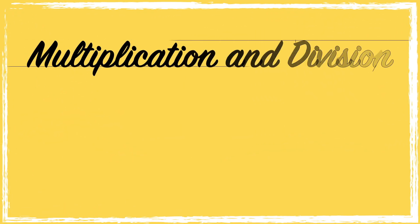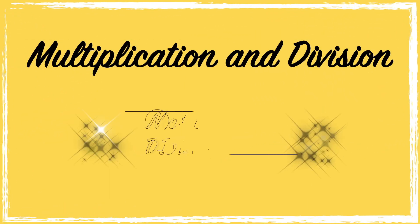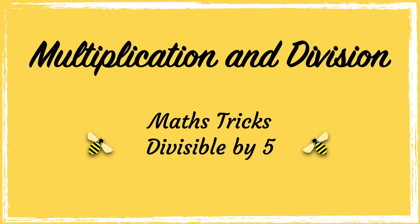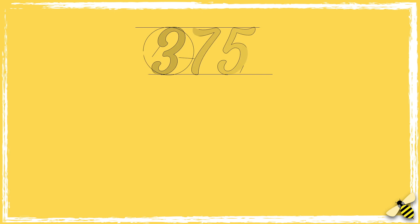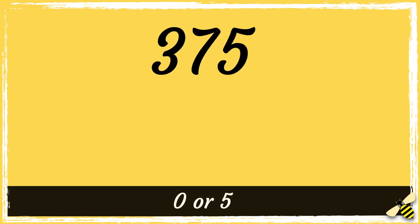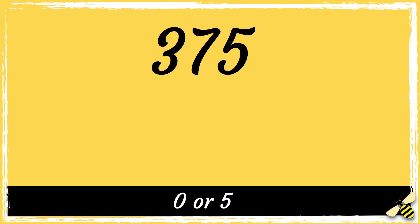In this video, we're going to learn a quick trick to find out if any number can be equally divided by 5. Here is the number 375. If the last digit is either a 0 or a 5, then the entire number will be divisible by 5.